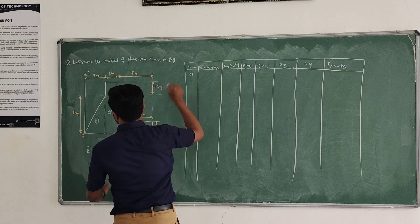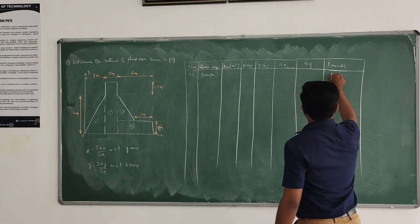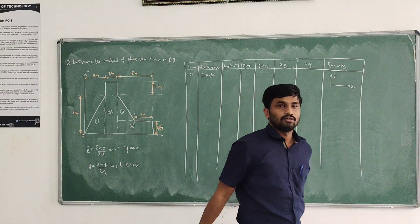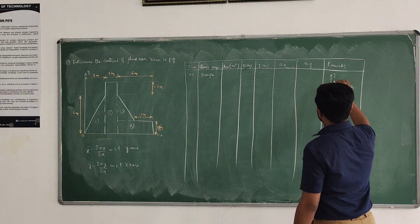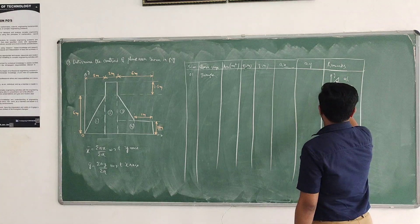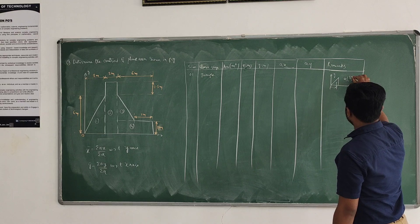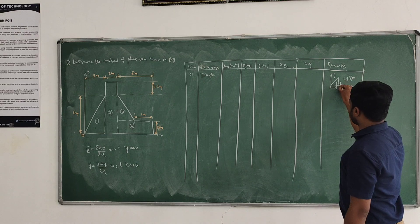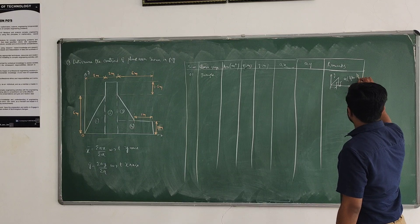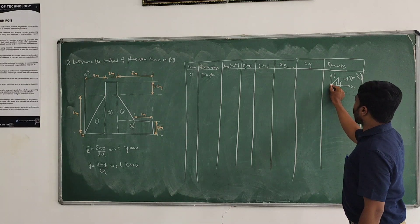Coming to the first basic shape — triangle. For the remarks: here we have the Y-axis and here the X-axis, so all basic shapes lie in the first quadrant. Both X and Y are positive. For the triangle centroid G: X is measured from the apex — two-thirds of B — and Y is measured with respect to the base, so H by 3. We are measuring X from the apex, so two-thirds of B.